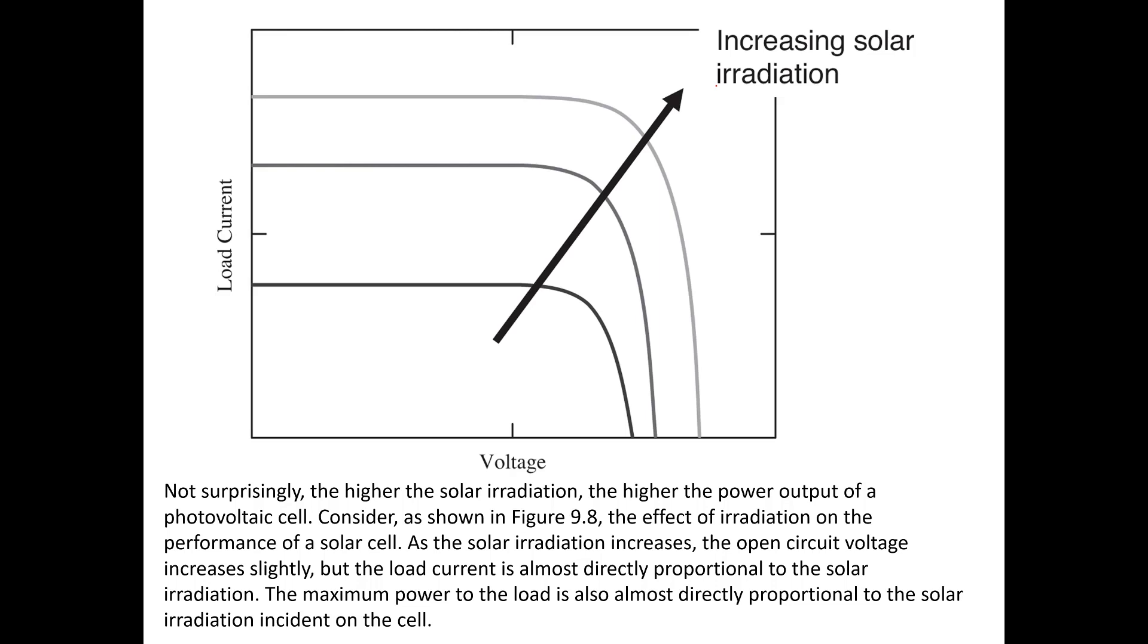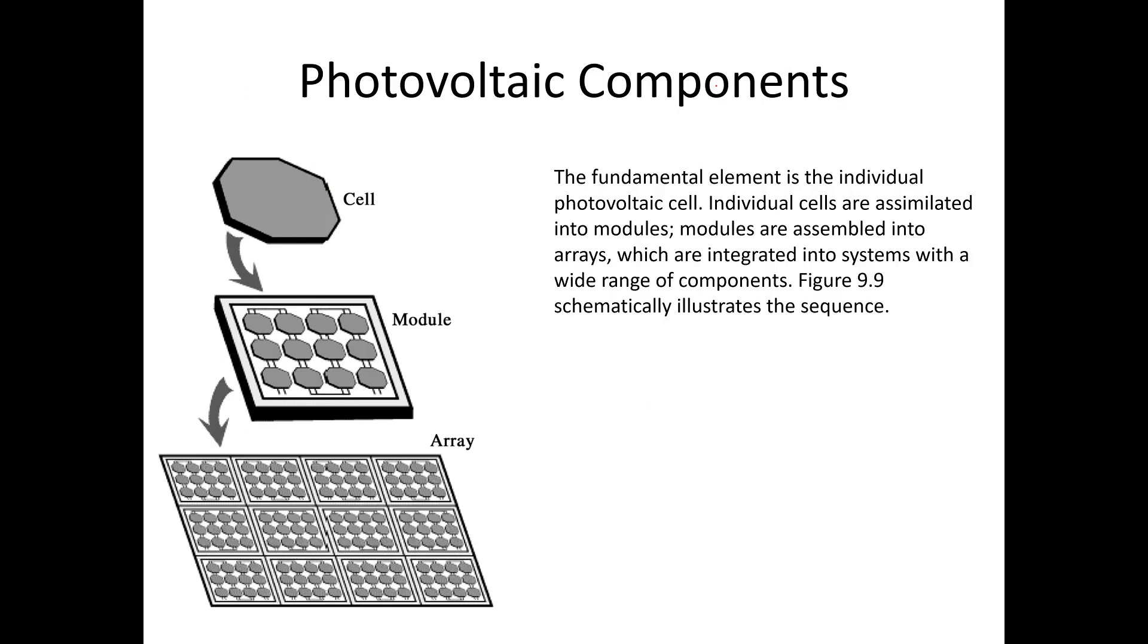Let's look at now the components of a photovoltaic cell. The fundamental element is the individual photovoltaic cell. Individual cells are assembled into modules, and then modules are assembled into arrays, which are integrated into systems with a wide range of components.